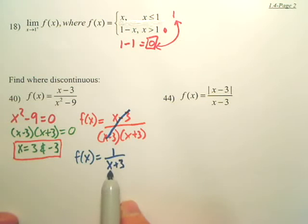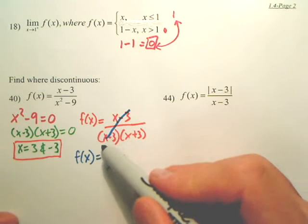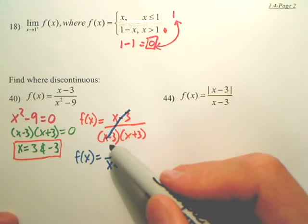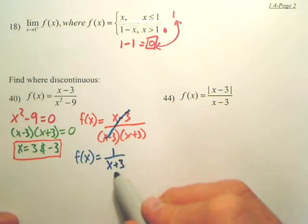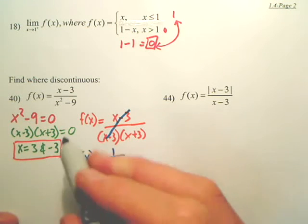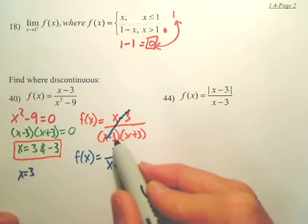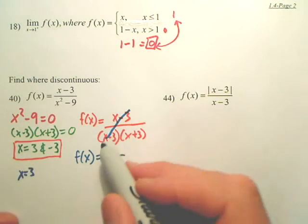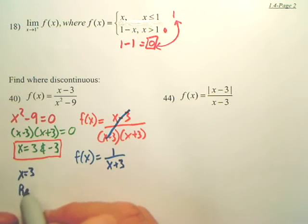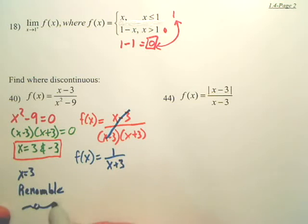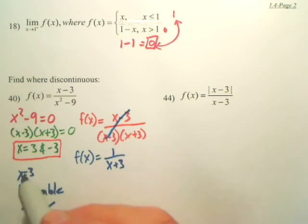So that means did we just remove 3? Can we remove negative 3? So x equals 3, because it was removed, because 3 minus 3 gives you 0. Remove that problem. x equals 3 is removable. Meaning it's a hole. x equals 3 is removable. It's a hole.